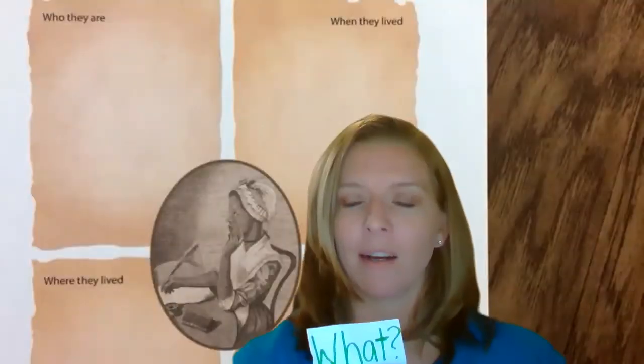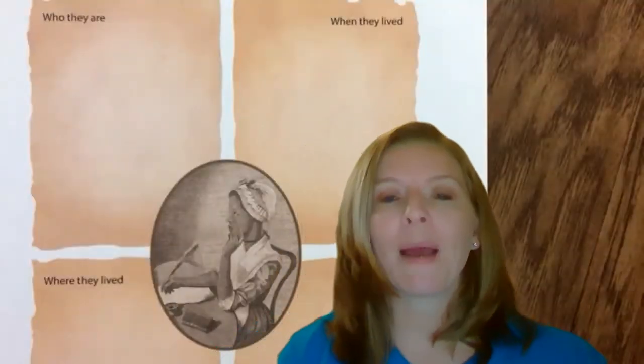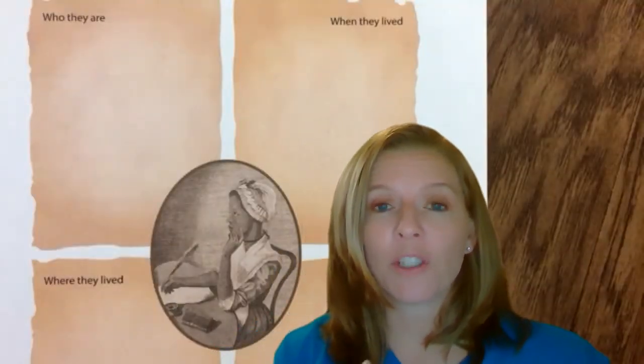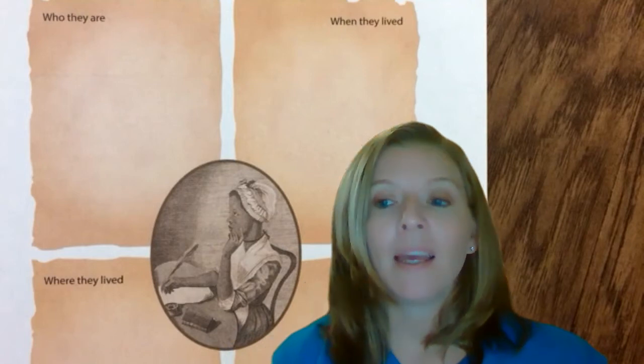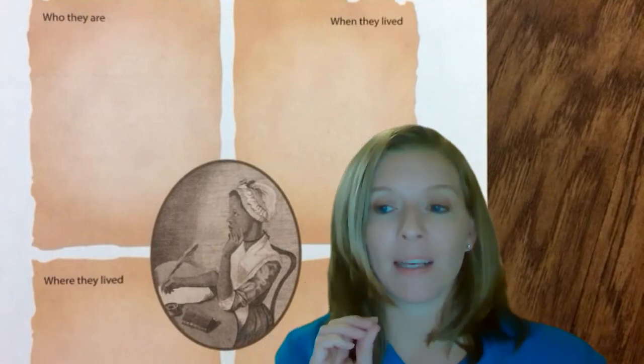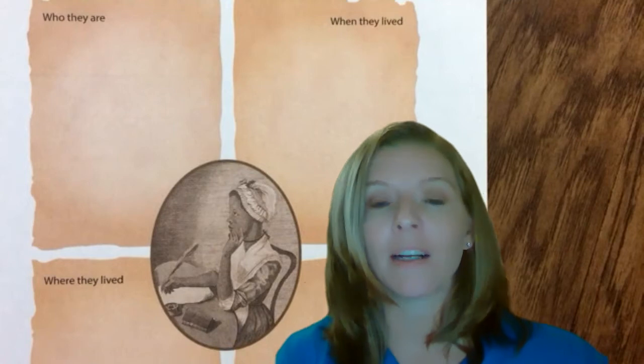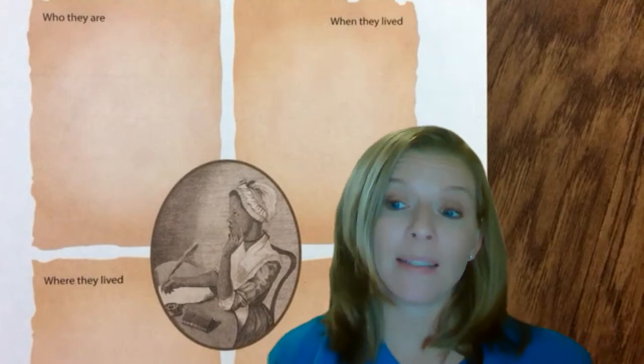Look at page 248. What happened to Phyllis Wheatley on August 18, 1771? She was baptized. She was baptized on that date. Now your worksheet for today is a timeline, and this is an exact date and year that you could possibly add to the timeline on today's worksheet.